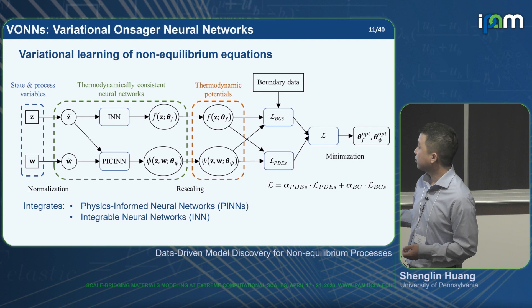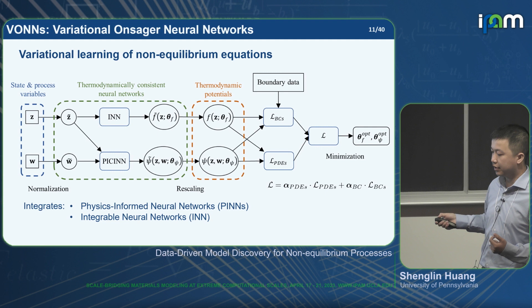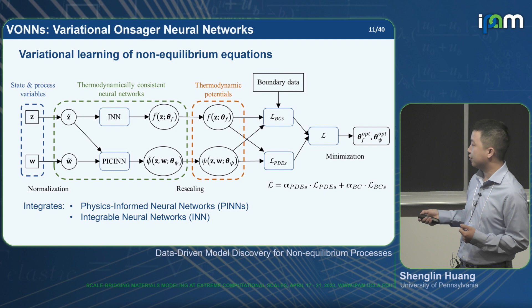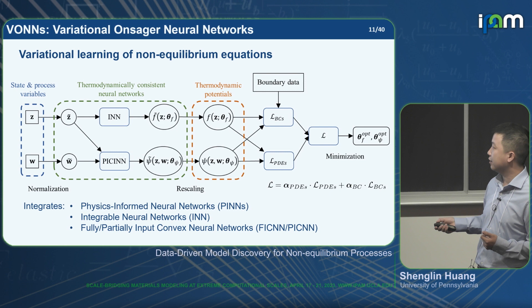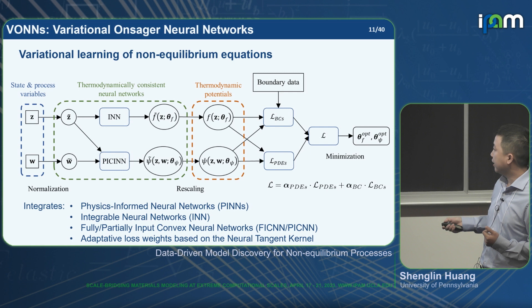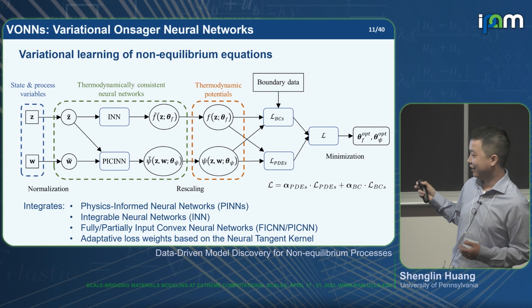We also need additional techniques. The first is an integrable neural network, because the free energy and dissipation potential themselves do not appear directly in the equations — only their derivatives do — so the learned function needs an integrable property. To satisfy the second law, we need convexity on the dissipation potential, so we use a fully or partially input convex neural network. To make training more robust, we use adaptive loss weights to automatically tune the loss weights rather than by hand.